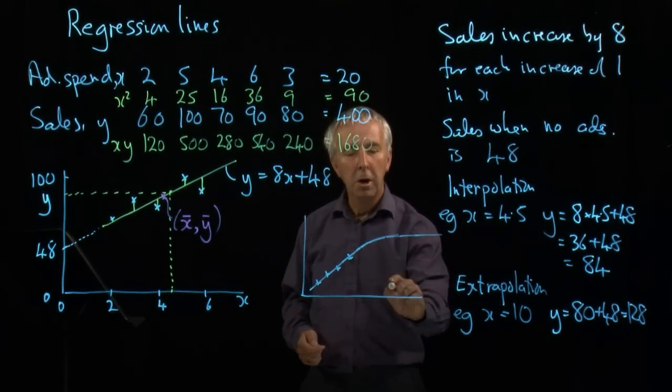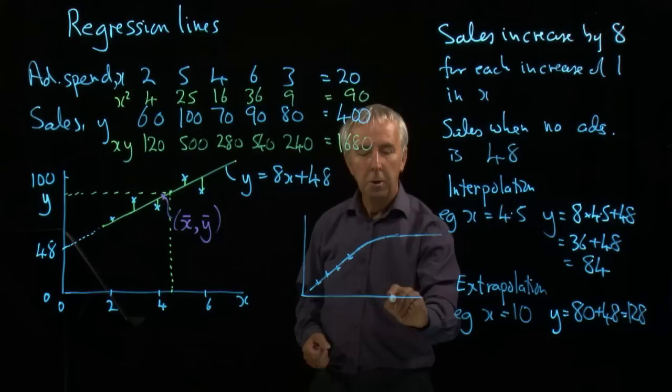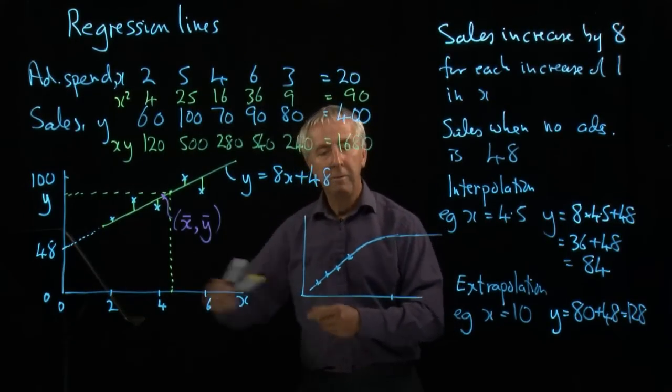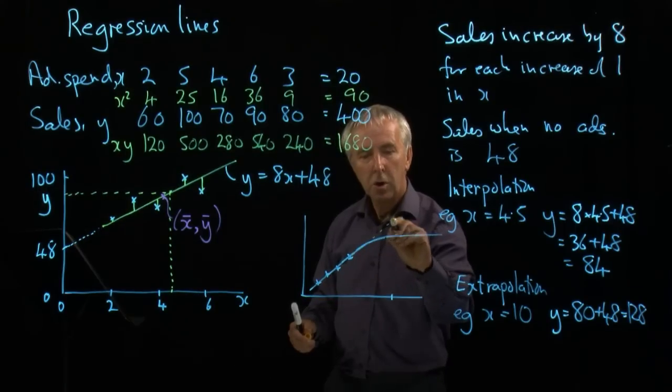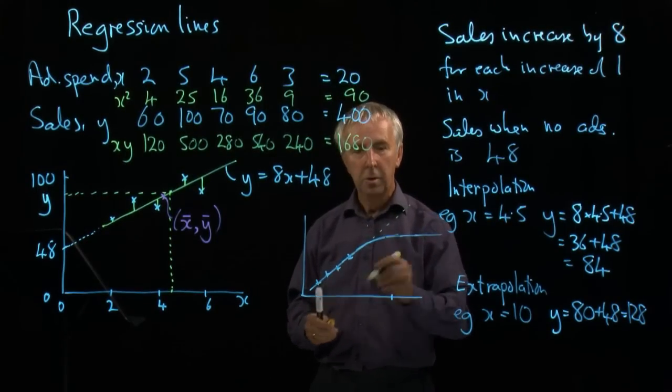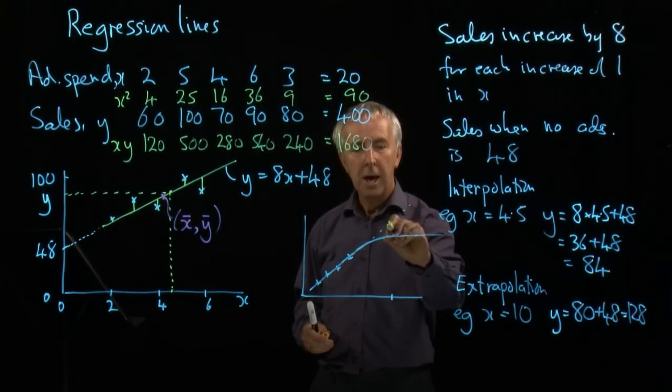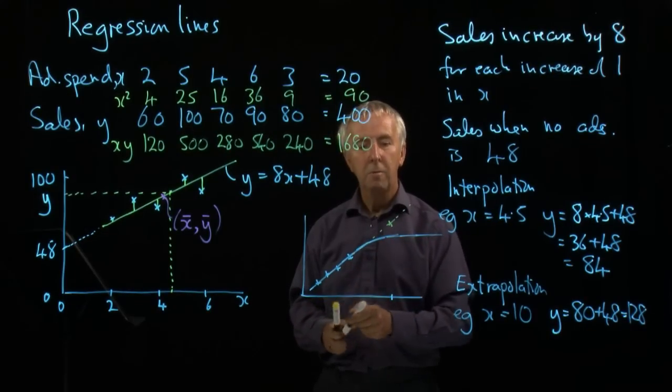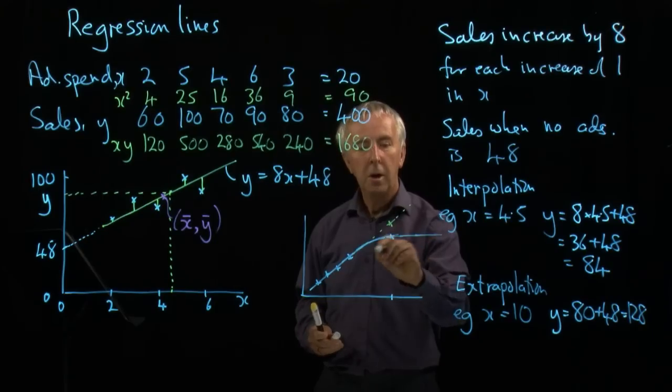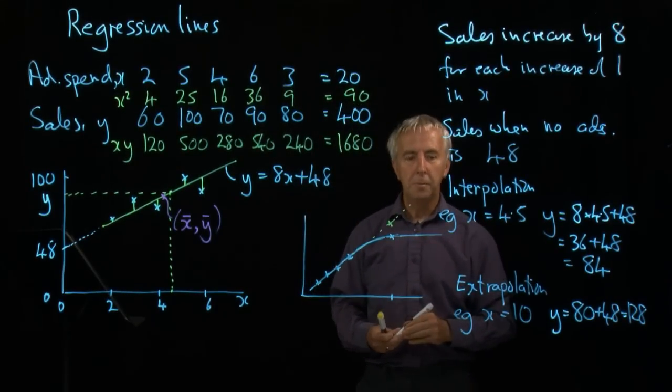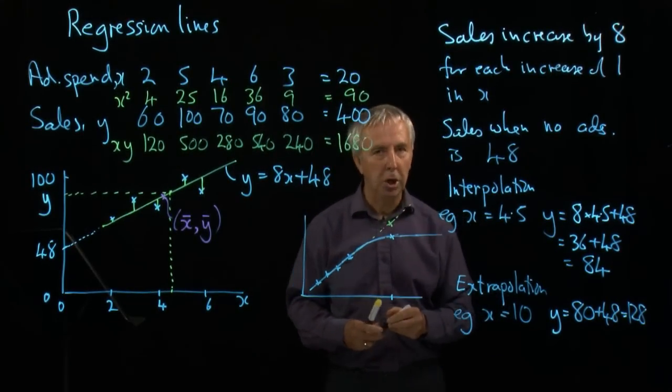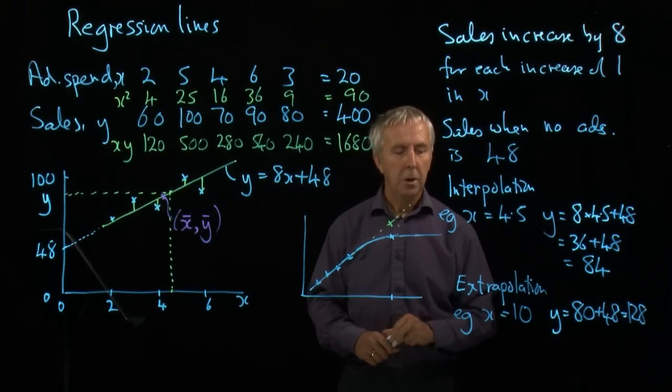So if we're trying to find the y corresponding to a value of x here, we would be very foolish to assume that the straight line continues. We would make that estimate, whereas in fact, the sales are saturating out at that level. So extrapolation can be quite dodgy.